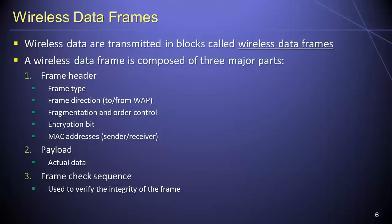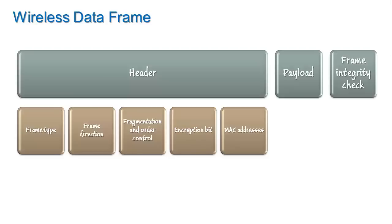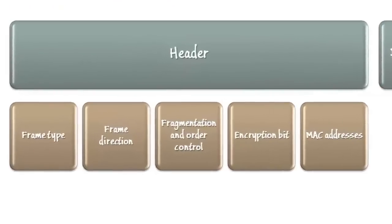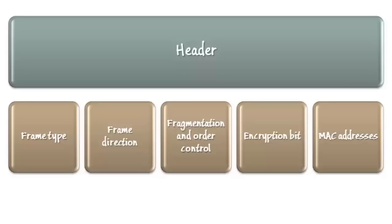Wireless data are transmitted in blocks called wireless data frames. Each wireless data frame is composed of three major parts: the frame header, the frame payload, and the frame check sequence. The frame header contains many different attributes necessary in order to make wireless networking practical in a multi-user environment. First among these is the frame type, which might be a standard data frame or some other sort of frame such as a beacon frame, an authentication frame, an association frame, and so forth.